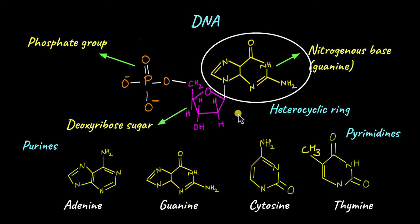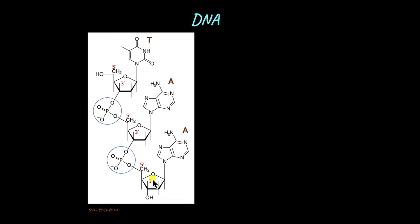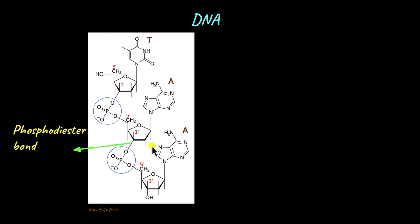Let's move on to how a DNA macromolecule is formed. Two nucleotides attach to each other and so on, forming a larger structure. The bond that links two nucleotides together is a phosphodiester bond, formed between the phosphate group of one nucleotide and the hydroxyl group found attached to the third carbon of the next nucleotide. As more and more phosphodiester bonds are formed, the pentose sugar and phosphate group form a sugar-phosphate backbone, from which the nitrogenous bases are projected inwards.